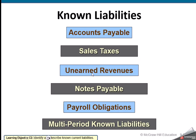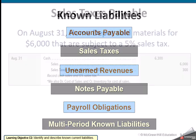Unearned revenues is when our customers pay us in advance and we either owe them the service or we owe them their money back. Notes Payable is similar to Accounts Payable, but it's longer term and we are able to charge interest. And then there'll be all kinds of different payroll obligations and payroll payables.